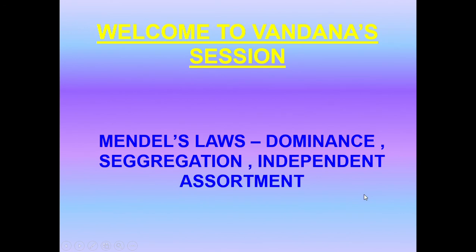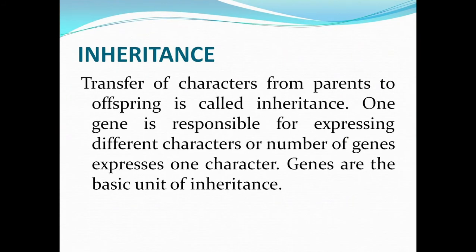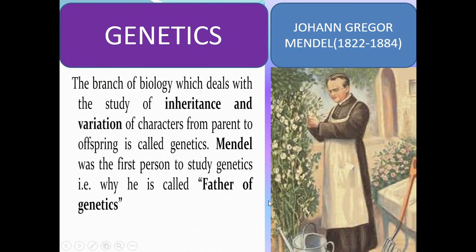Today we are going to discuss Mendel's laws — dominance, segregation, and independent assortment — which are part of genetics, the second unit's first chapter. Inheritance is the transfer of characters from parents to offspring. One gene can be responsible for expressing different characters, or a number of genes can express one character. Genes are the basic unit of inheritance. Genetics is the branch of biology that deals with the study of inheritance and variation of characters from parent to offspring. Mendel was the first person to study genetics, so he is called the father of genetics. This is the picture of Johann Gregor Mendel.